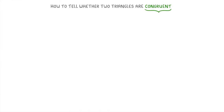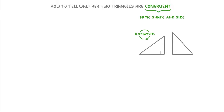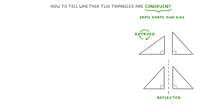Congruent just means exactly the same shape and size. So congruent triangles need to have the same shape and size, but they might have different orientations. For example, they could be rotated versions of each other, like these two, or reflected versions of each other, like these ones.